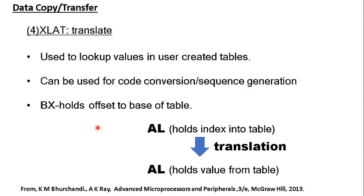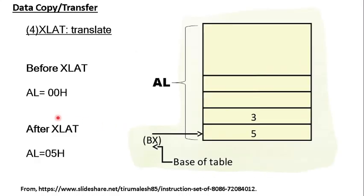In short, XLAT is used to look into a table that a user has created and take a value from the table. It can be used for code conversion or sequence generation. For using XLAT, we make use of two registers: BX and AL. BX holds the offset to the base of the table.